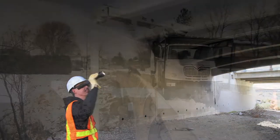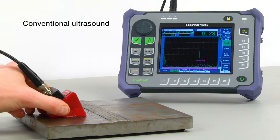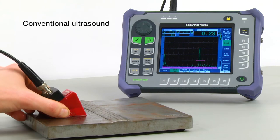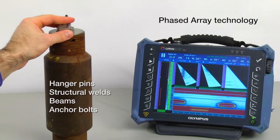Inspectors use a variety of non-destructive techniques to monitor bridges for defects. These techniques include using conventional ultrasound and phased array technology to inspect hanger pins, structural welds, beams, and anchor bolts.